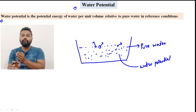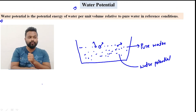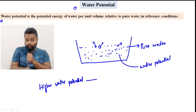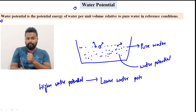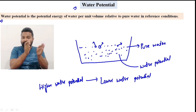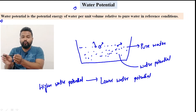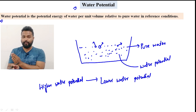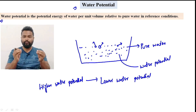Water always moves from higher water potential to lower water potential. This energy can be moved around. When water is at a higher level of water potential, it moves to a lower level of water potential, and the energy can be maintained.